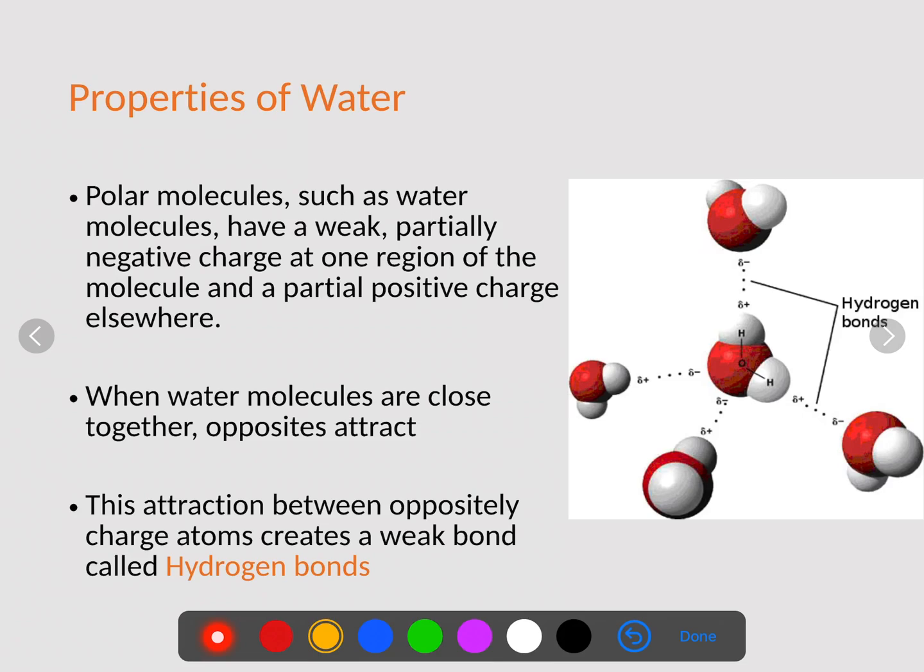So again, hydrogen bonds are the reason for all of these characteristics of life. Polar molecules such as water molecules have a weak, partially negative charge at one region of the molecule and a partially positive. It creates this subtle attraction between the water molecules. This is why there's all these rivers and streams and why when you dip a paper towel in water it will climb up because of these hydrogen bonds.